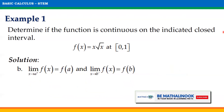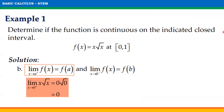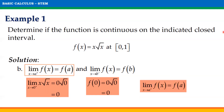For the second condition, the limit of f(x) as x approaches a from the right should equal f(a), and the limit of f(x) as x approaches b from the left should equal f(b). Evaluating the limit of f(x) as x approaches 0 from the right, we get 0 times the square root of 0, which equals 0. Evaluating f(0), we also get 0 times the square root of 0, which equals 0. Notice that the limit as x approaches a from the right equals f(a).